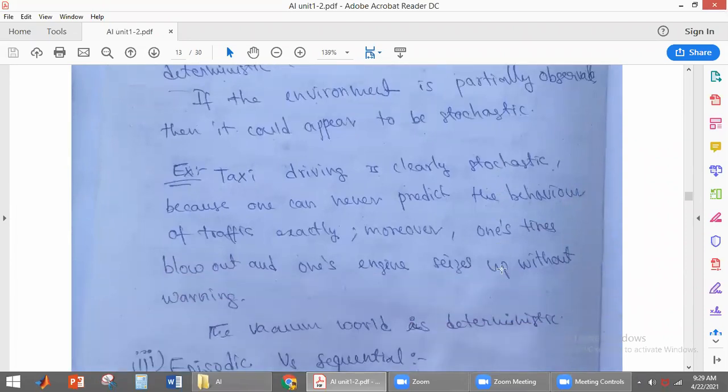For example, taxi driving is clearly stochastic because one can never predict the behavior of the traffic exactly, and one's tires blow off and one's engine seizes up without warning. Because of these parameters, we cannot predict the traffic. The traffic will be changing randomly.